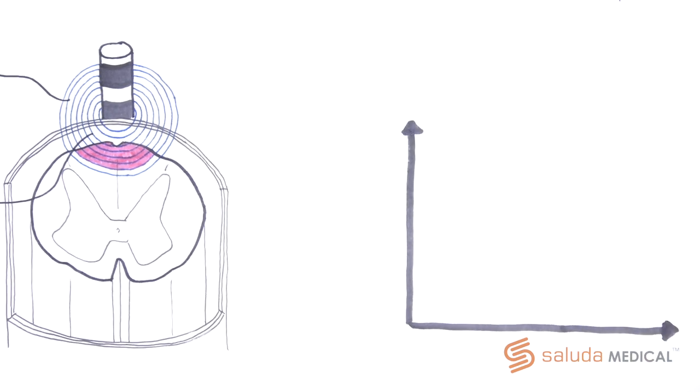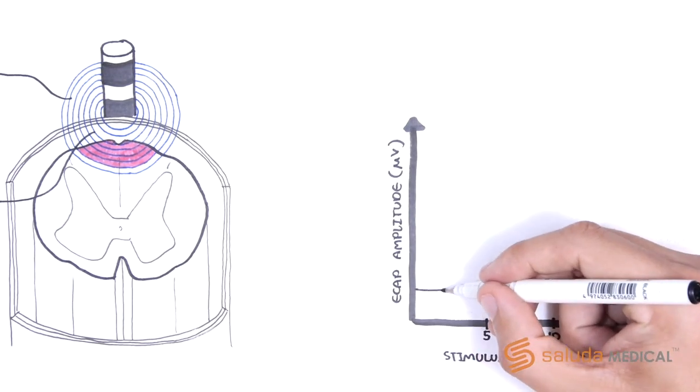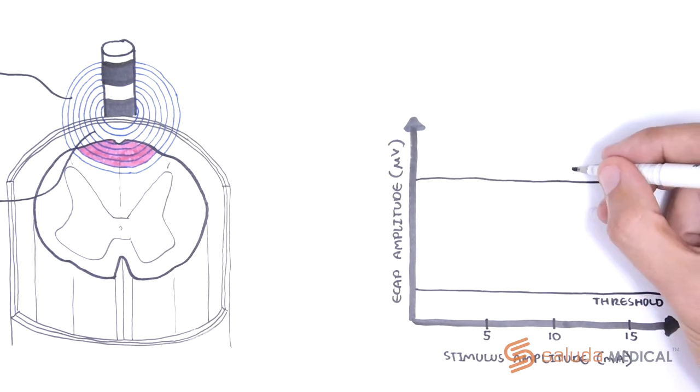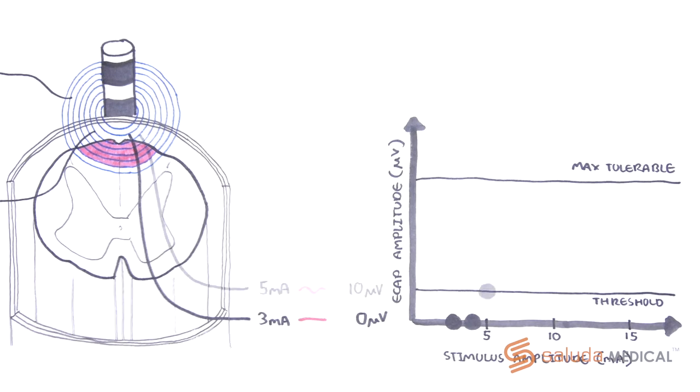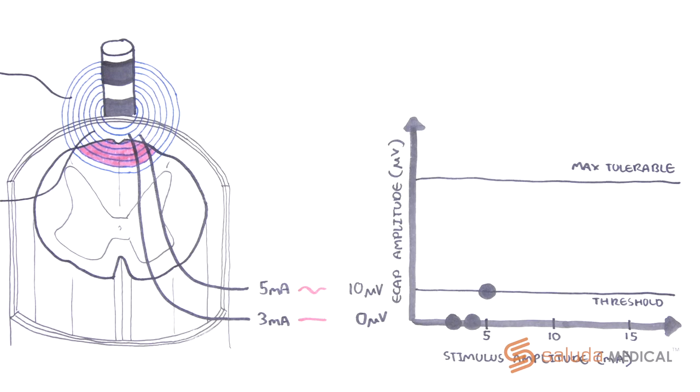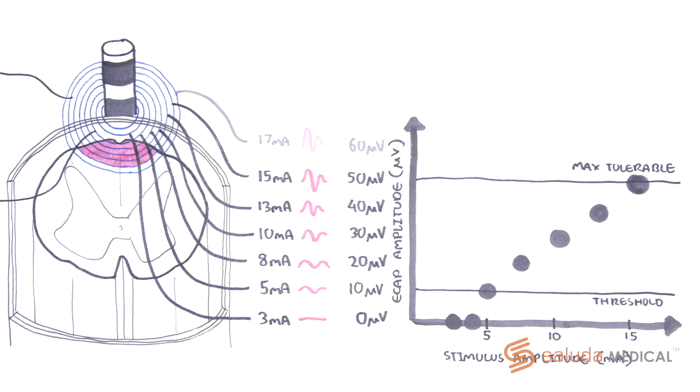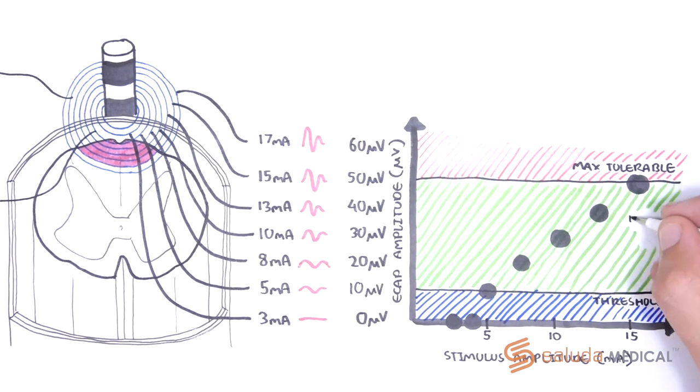This can be achieved by measuring an activation plot, with ECAP amplitude plotted against stimulus amplitude, where the patient reports when they first become aware of the stimulation, referred to as a perception threshold, up until the moment the stimulation becomes uncomfortable, referred to as a maximum tolerable. In this example, 3 mA and 4 mA stimuli generate no ECAP and no sensation. However, as the stimulation is increased, the patient reports some sensation at 5 mA. The ECAP is detected and the ECAP amplitude increases linearly until 15 mA, where the patient notes the stimulation becomes uncomfortable. We can label our measured upper and lower bounds. The range within these bounds comprises what we call the therapeutic window.